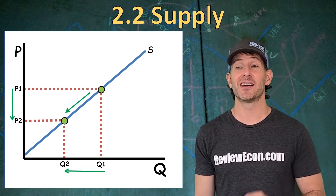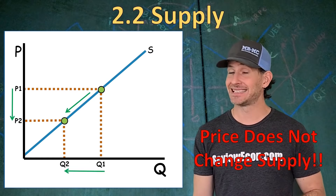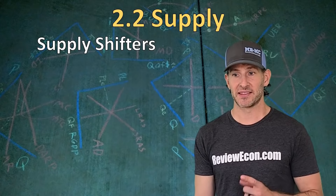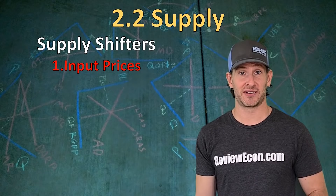Just like with demand, price changes quantity supplied — price does not change supply. Make sure you know that; it will trick you on your test. But there are things that do shift supply — we call those non-price determinants of supply, or supply shifters.